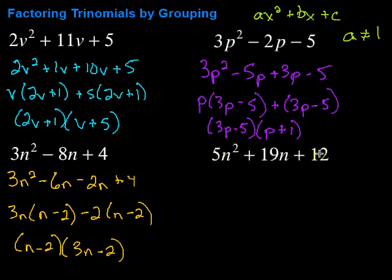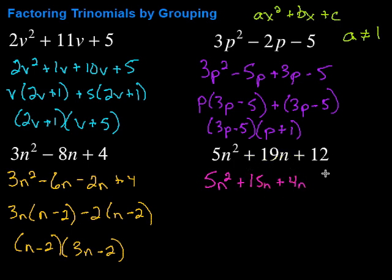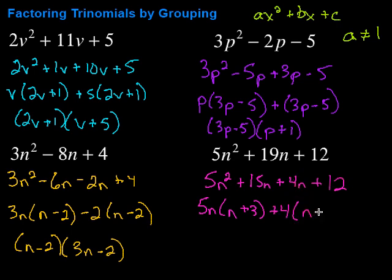Let's try one last one. We've got a times c, five times twelve is sixty. So we're looking for factors of sixty that add up to nineteen. How about fifteen and four — fifteen plus four adds up to nineteen. So we'll go plus fifteen N plus four N, breaking that nineteen N up into those two pieces. These first two have a five N in common, so I pull that out front: five N times N plus three. Then the next two have a four in common: four times N plus three.